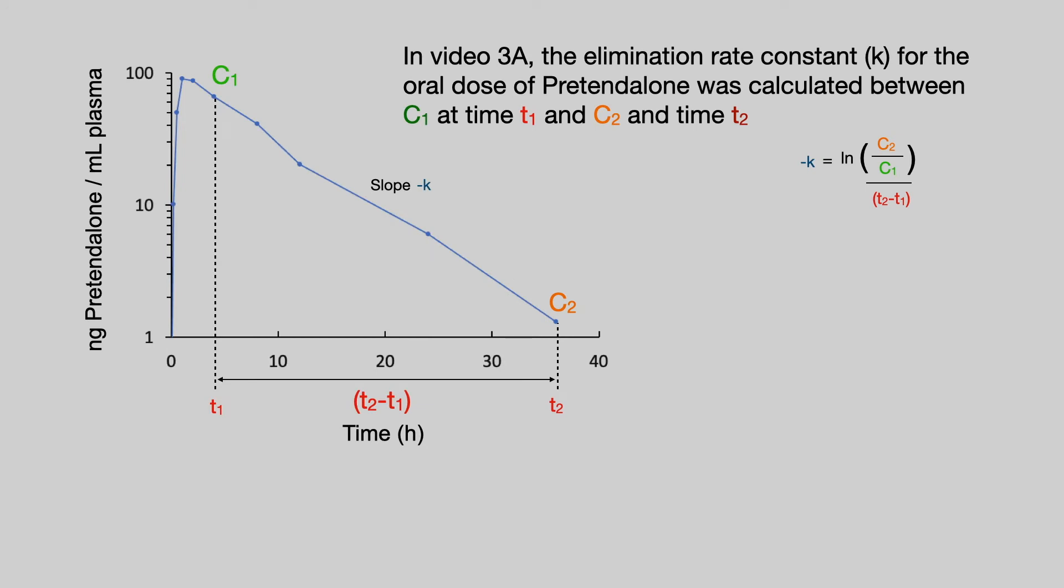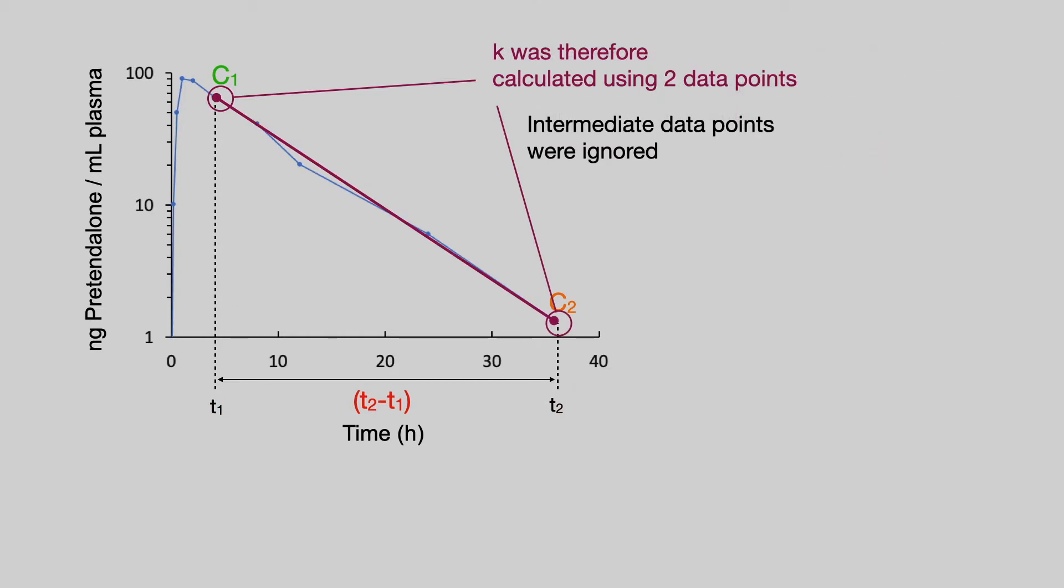In the previous video, video 3a, we calculated the elimination rate constant, or k, for the oral dose of Pretend Alone. It was calculated between a drug concentration C1 at time T1 and a drug concentration C2 at time T2. This means that we calculated the elimination rate constant using two data points.